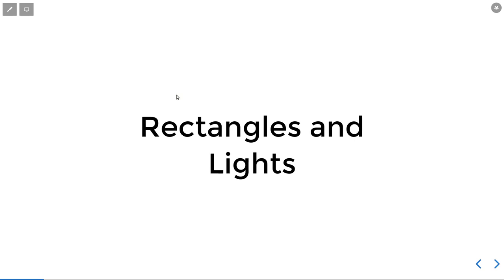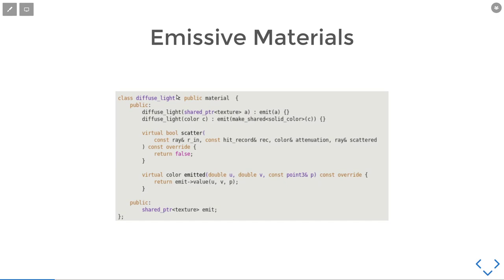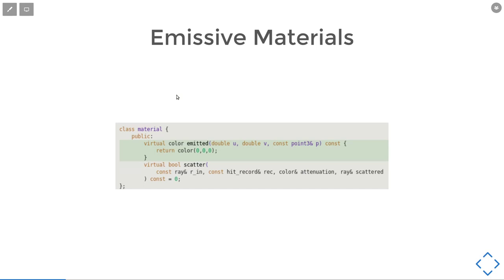First, let's talk about rectangles and lights. To have a light in the scene, currently we just have one background light that is everywhere. But we want to introduce a diffused light material that will emit light when we intersect with it. The way we do it is to add another emitted function to the material. It will take the UV coordinates and return the emit value of the texture. For every material except the emissive material, we will just have black color emitted, which means we will not emit anything.